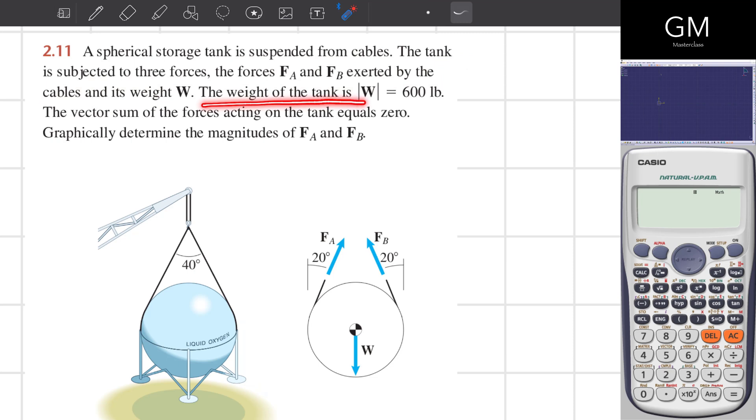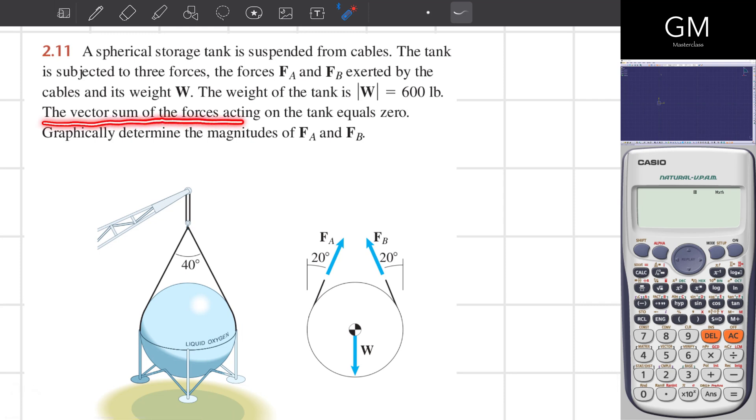The weight of the tank is W equals 600 pounds. The vector sum of the forces acting on the tank equals zero. Graphically determine the magnitudes of F_A and F_B.